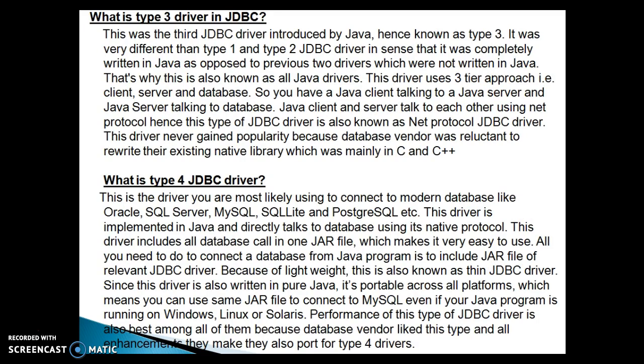The Type 3 driver was the third JDBC driver introduced, hence known as the Type 3 driver. It was very different from Type 1 and Type 2 drivers in that it was completely written in Java, as opposed to the previous two drivers. That is why it is also known as the All Java driver. This driver uses a three-tier approach — a client, server, and database. The Java client talks to a Java server, and the Java server talks to the database. The client and server communicate using a net protocol, so this driver is also known as the Net Protocol JDBC driver. This driver never gained popularity because database vendors were reluctant to rewrite their existing native libraries, which were written in C and C++.